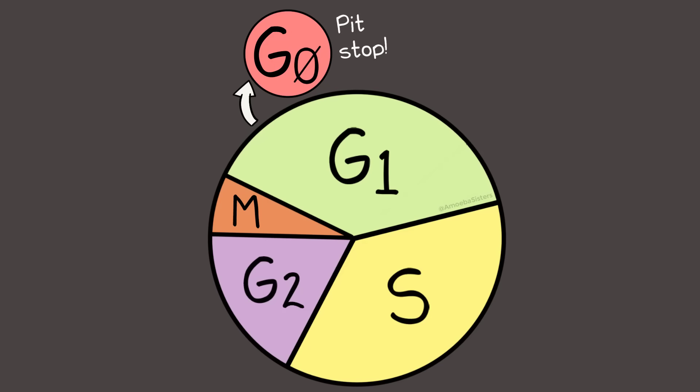One last thing to mention. There are some cells that don't go through the phases we mentioned because they're actually in G0. That's a zero, by the way, and not an O, because if it was an O, then it'd say go, and G0 is kind of the opposite of that.